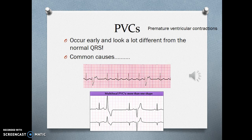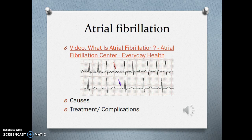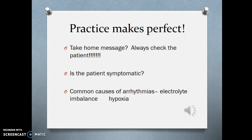Atrial fibrillation will be covered in class — important things to understand are the causes, treatment, and complications, particularly stroke risk. Take-home messages: you need to check the patient. Assess, assess, assess. Look at the patient's symptoms and think first about electrolyte imbalance and hypoxia. Complete your pre-assignment and the questions written there. I look forward to seeing you in class and reviewing this material.